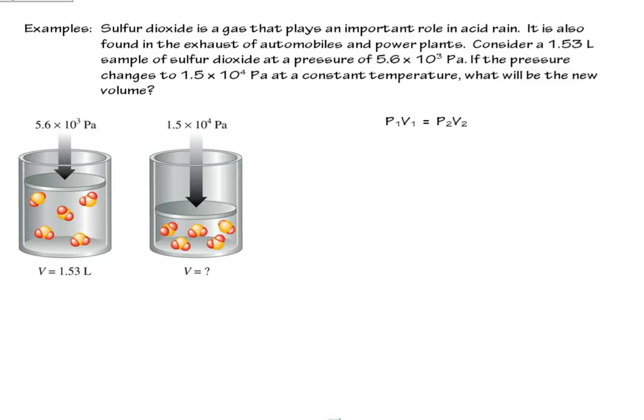Sulfur dioxide is the gas that smells like somebody, I don't know, like puked rotten eggs or something. It's kind of like that sulfur gas smell. It is present in acid rain and in the exhaust of automobiles and power plants. So we've got a 1.53 liter sample of sulfur dioxide at a particular pressure. They're measuring it in just regular pascals. If the pressure changes, so we're going to increase the pressure at constant temperature, and it also does need to be a closed container so the number of particles remain constant. What will be the new volume?